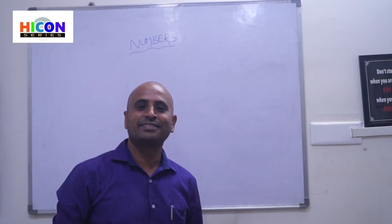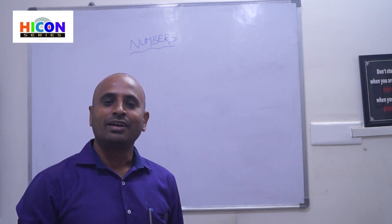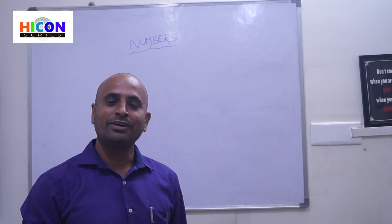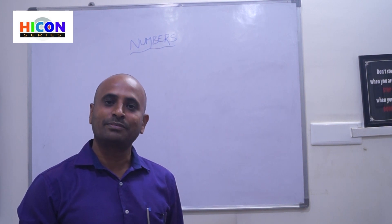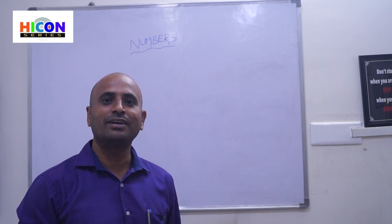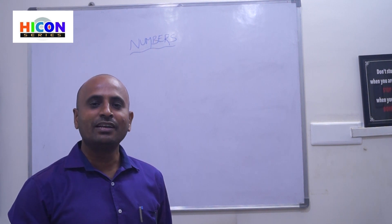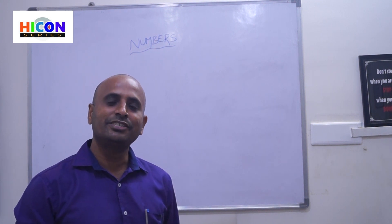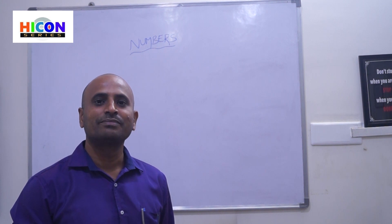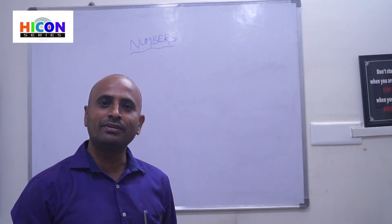We are going to discuss the chapter of numbers. In the previous class, that is in fifth class, we have already dealt with five-digit and six-digit numbers, how to write number names for them, how to write expanded form and standard form, how to compare numbers, and how to write face values. In this class, we will deal with seven-digit and eight-digit numbers, and learn how to write number names, place values, and face values for them.